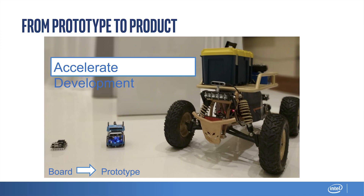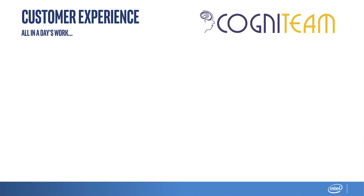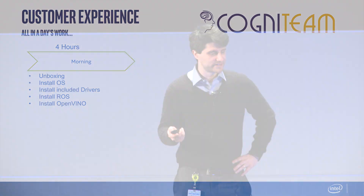After you have everything working, you can deploy this to your industrial robot or whatever robot application you're looking to build. Using this kit will drastically cut down on the amount of development time you will need. I wanted to tell a quick story about one of our customers — Cogna Team. They're building an ATV-style outdoor off-road robot out of Israel. They had a really compelling customer story about what they were able to accomplish in just a single day's work.